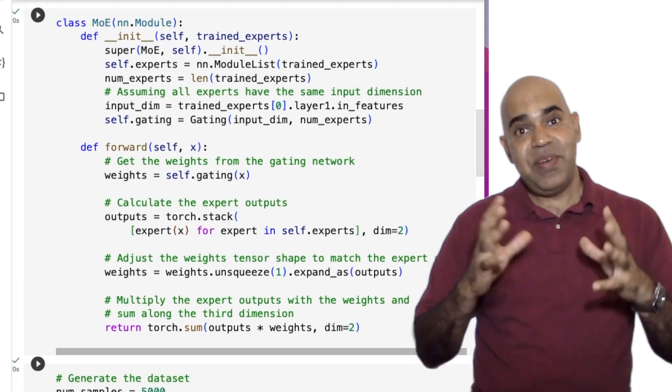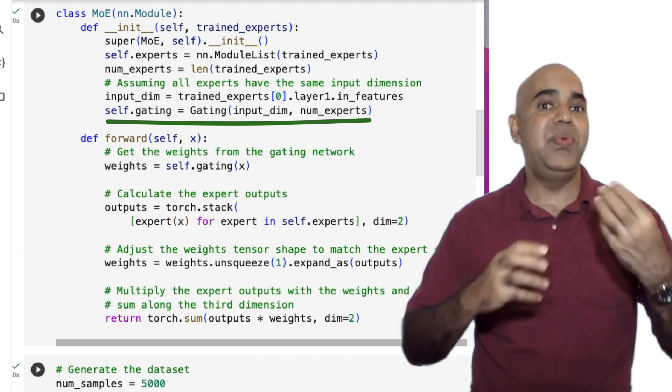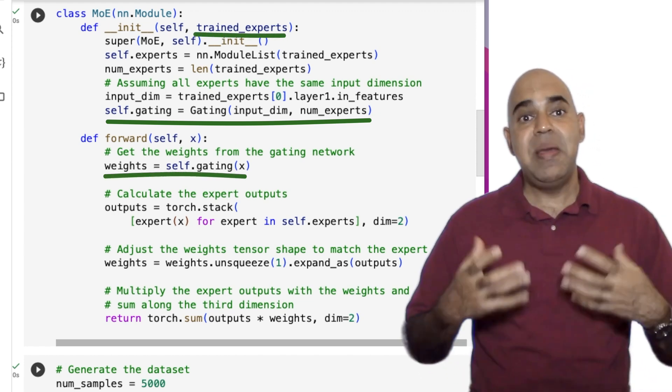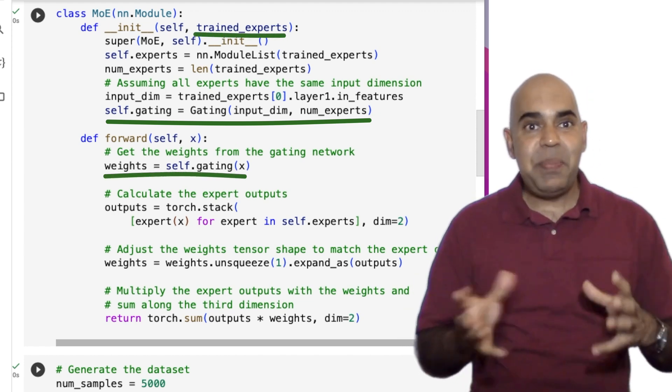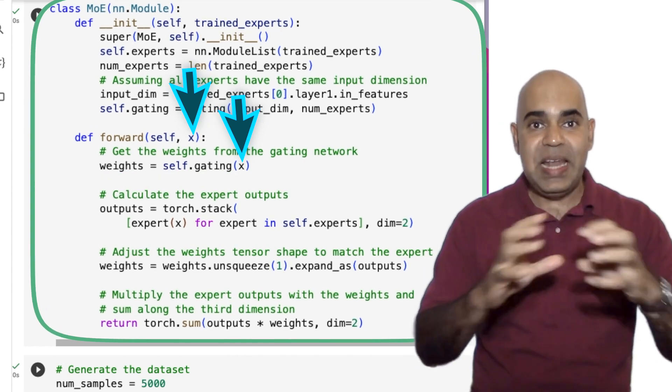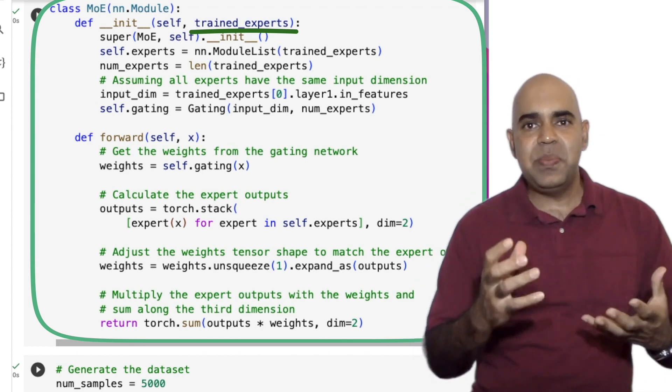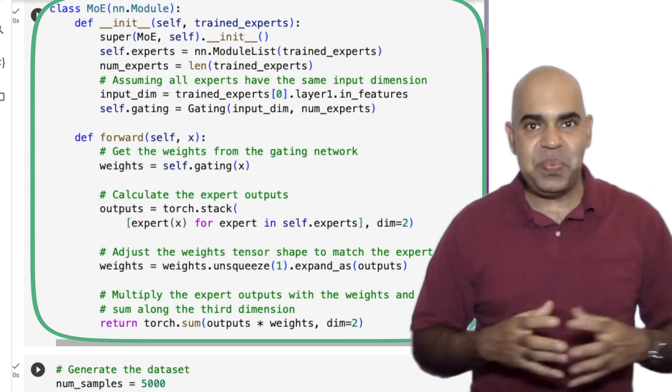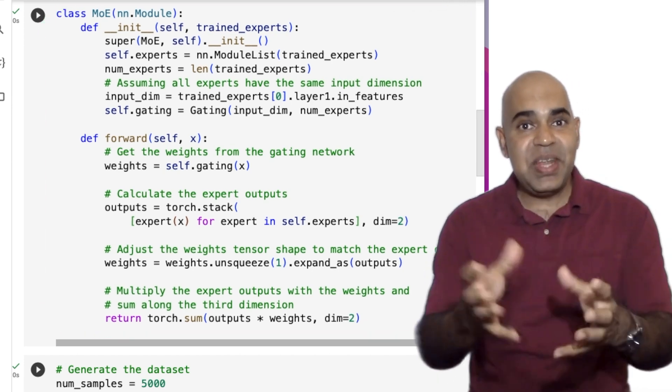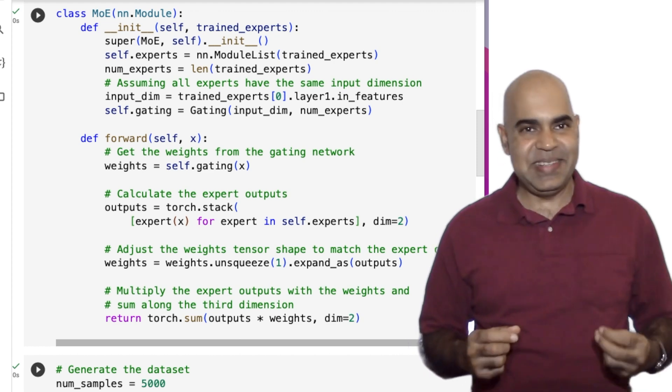Now, we have our mixture of experts class. It uses a gating network to decide how to weigh the outputs of multiple expert networks, depending on the input. This allows the mixture of experts to leverage the strengths of each expert, providing more flexible and potentially more accurate predictions. Now that we have an idea about the neural network models we will be using, let us discuss our experimental setting.